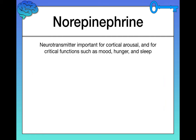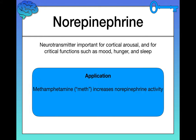Next, we have norepinephrine, a neurotransmitter important for cortical arousal and other functions, some of which are automatic, including mood, hunger, and sleep. Several different neurotransmitters are important for overlapping functions, including mood. In terms of applications, methamphetamine, or meth, increases norepinephrine activity — so think about the effects of norepinephrine and the effects of meth in terms of cortical arousal, mood, and sleep.